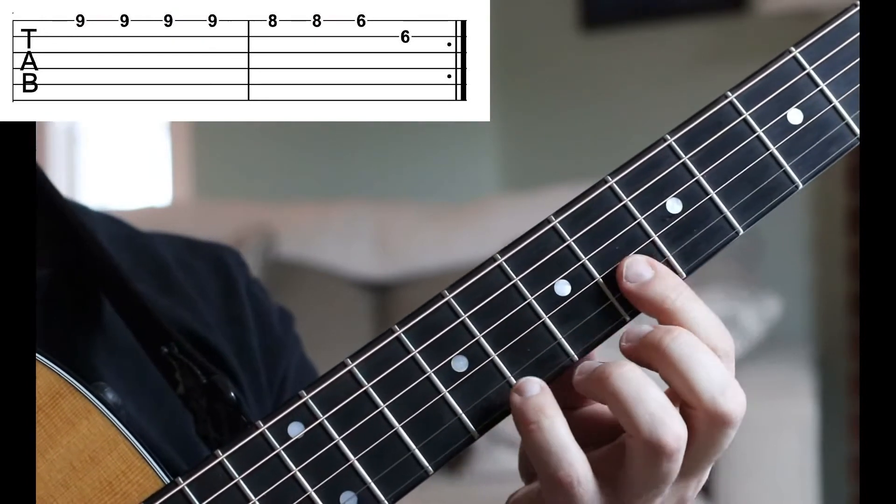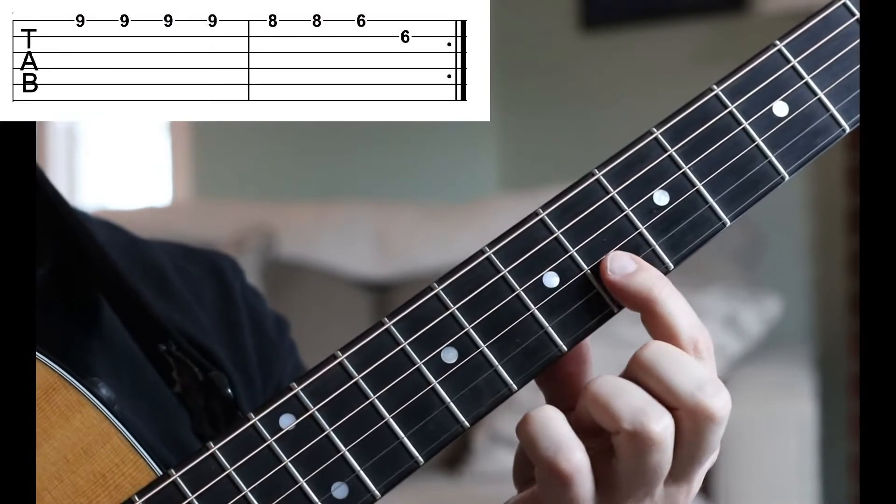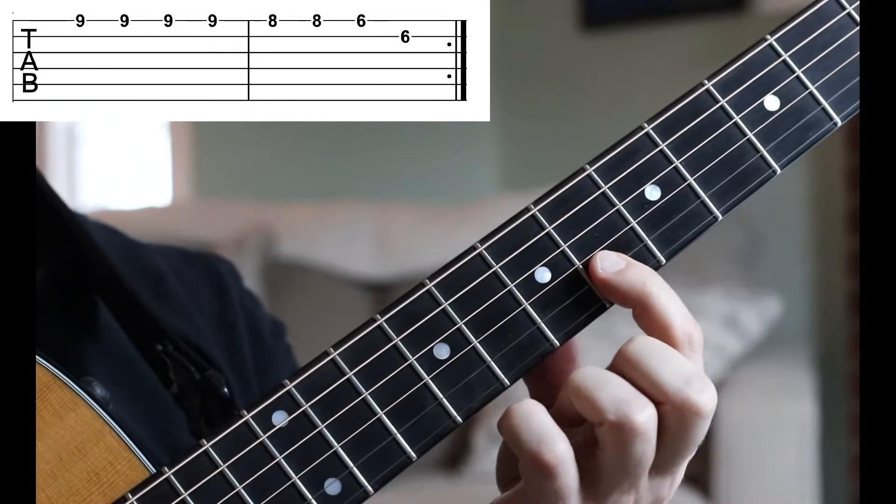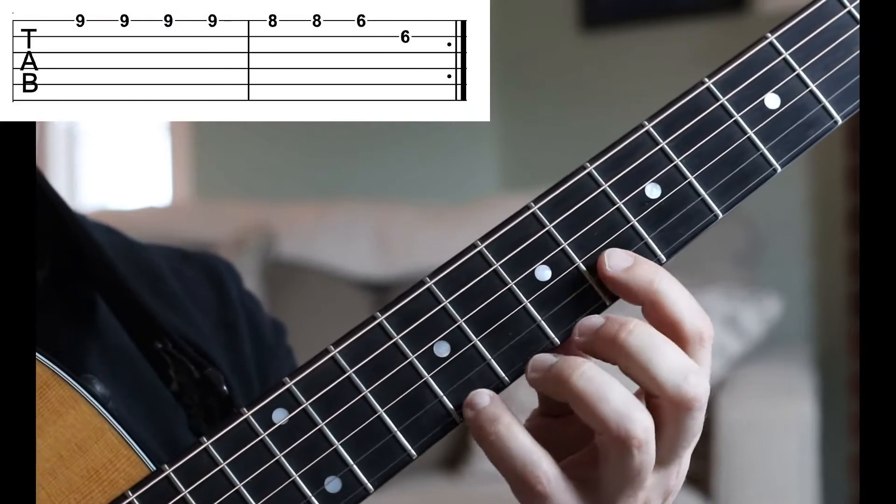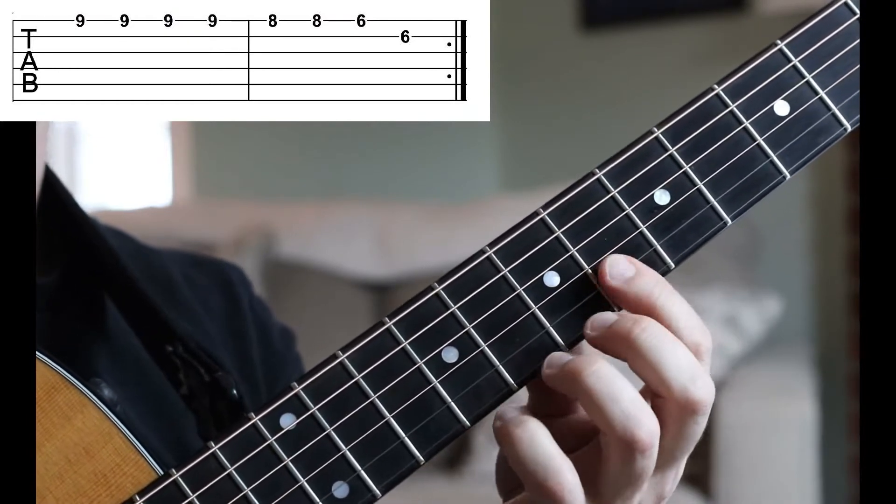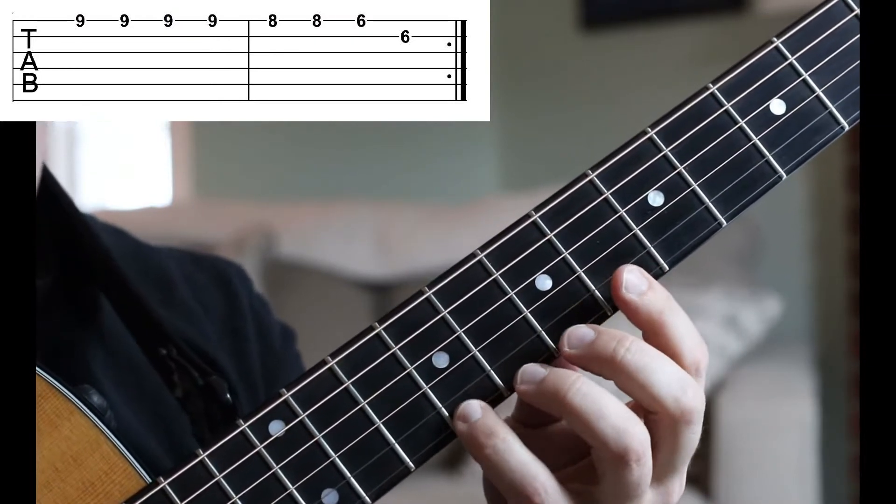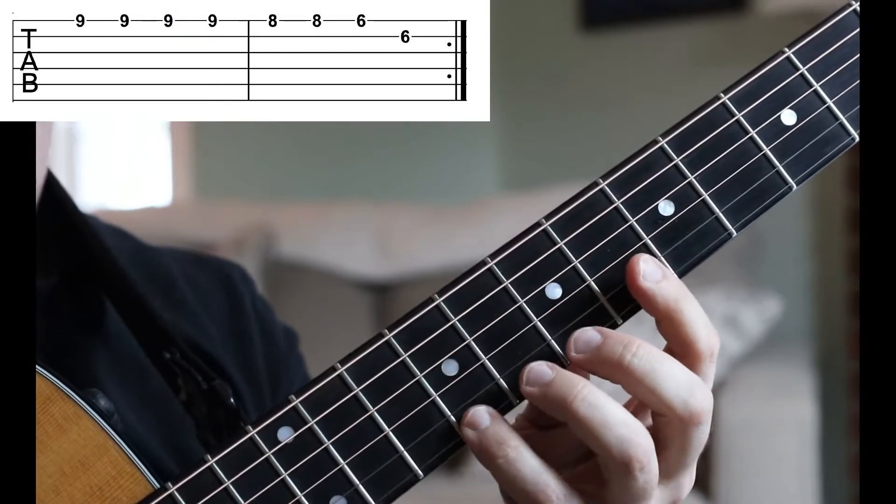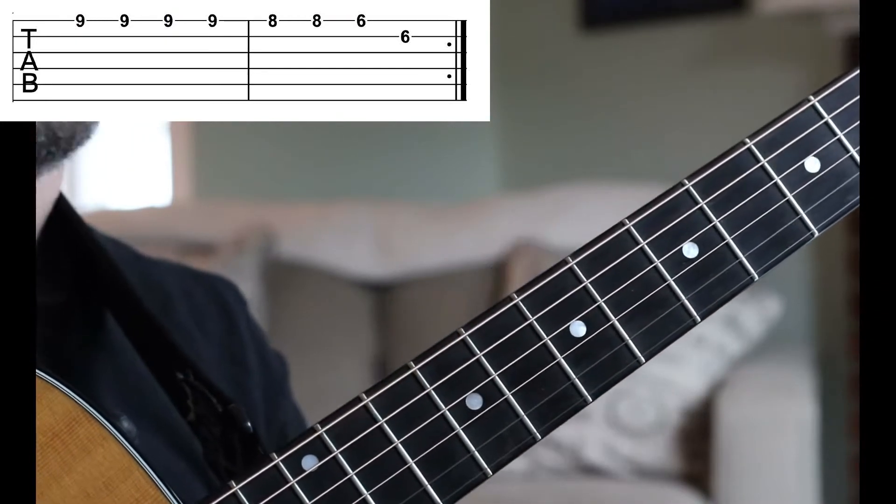Now you have an option when you're going to the 6 on the high E string and then the 6 on the B string. You can bar those two, which means pressing down your first finger on both strings. Or if you're a little new to this, you can hop up with your first finger, but it becomes a little trickier. But here we go.